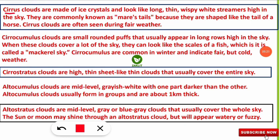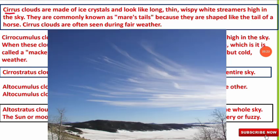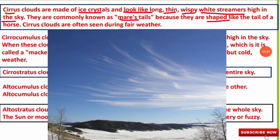Starting with cirrus clouds: they are made up of ice crystals and look like long, thin, wispy white streamers high in the sky. They are also commonly known as mare's tails because their shape is like the tail of a horse. These clouds are often seen during fair weather.